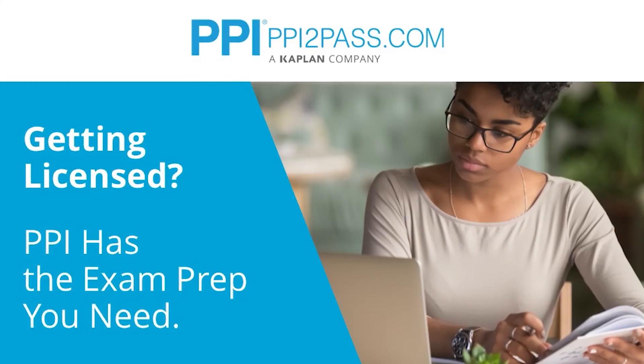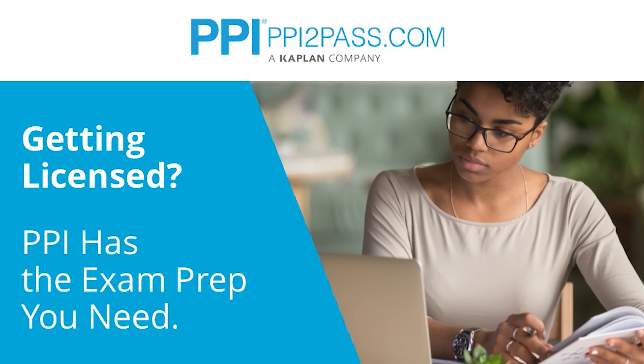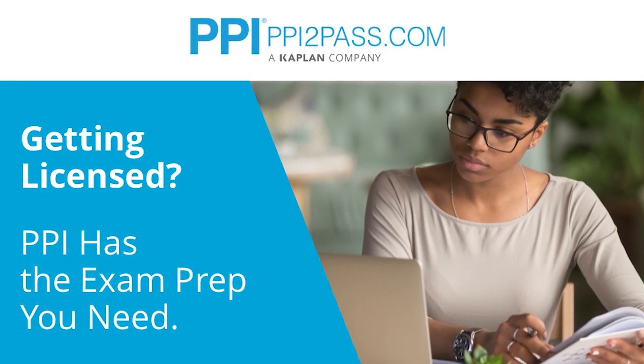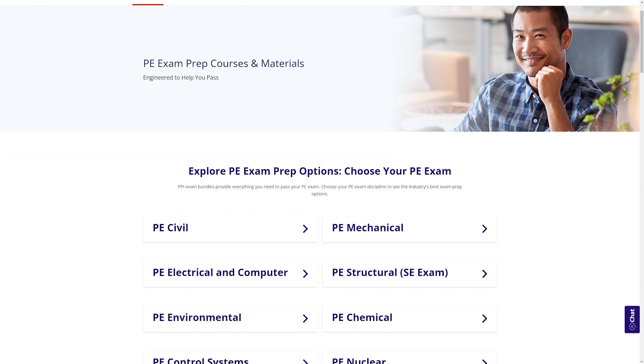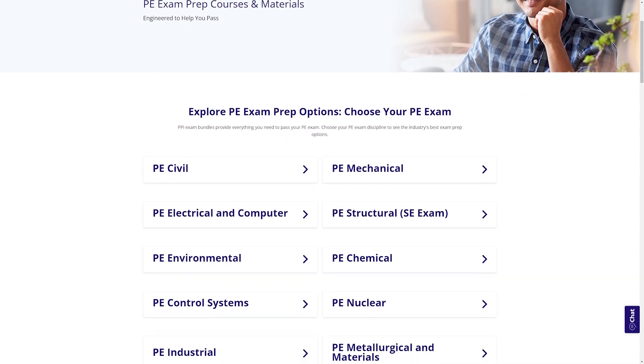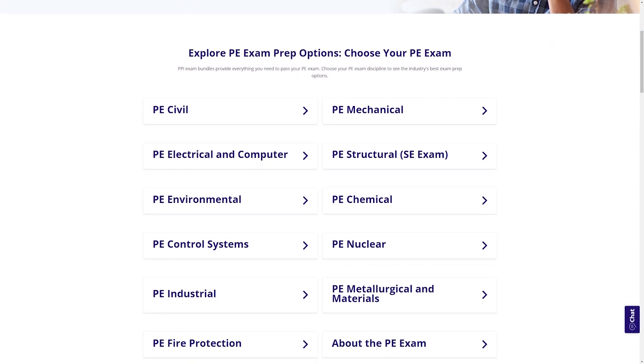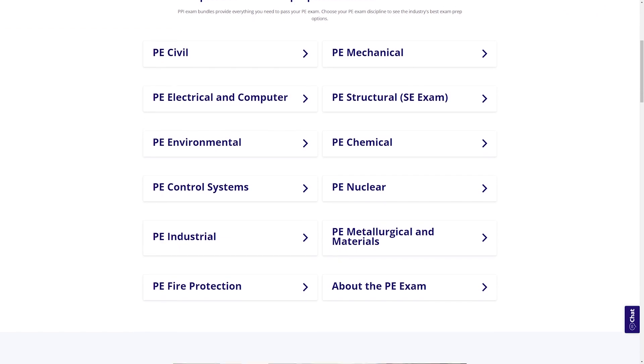PPI provides expert prep courses and study resources designed to help you pass the PE exam the first time. PPI's live online courses include hours of lectures, problem-solving demonstrations, exam strategy sessions, office hours, and the passing guarantee. When you take a live online course, PPI guarantees you will pass, or you can take the on-demand course for free.